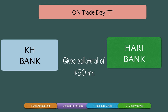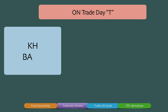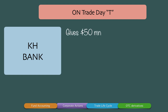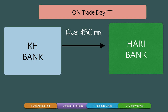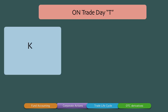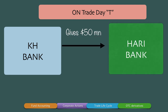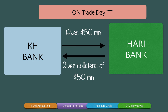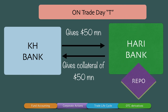To summarize what happens on trade day T: KH Bank gives $50 million as a loan to Hurry Bank, and in exchange Hurry Bank gives collateral to KH Bank. For Hurry Bank this is a repo trade, and for KH Bank this is a reverse repo trade — it's just a mirror image of a repo trade.